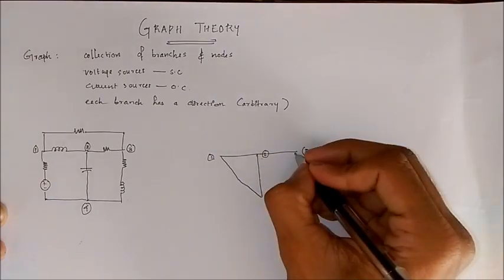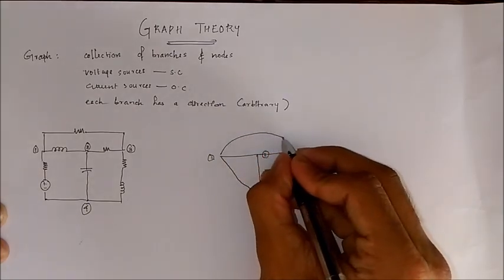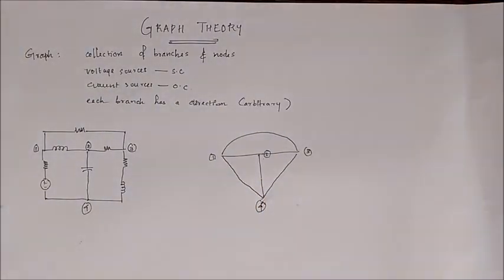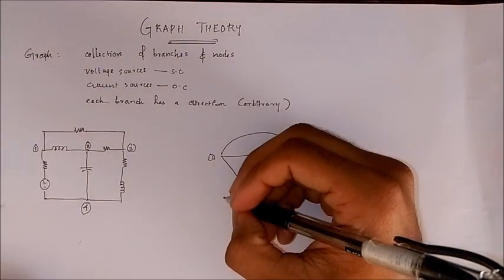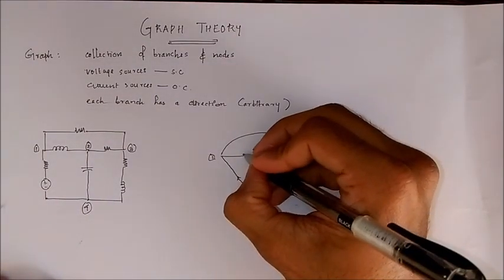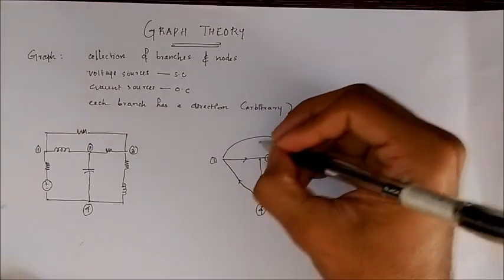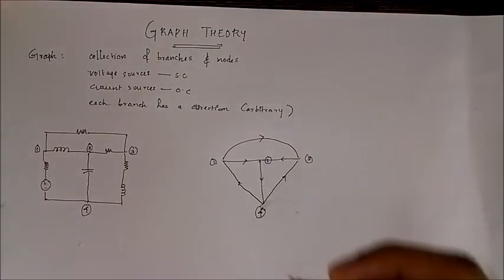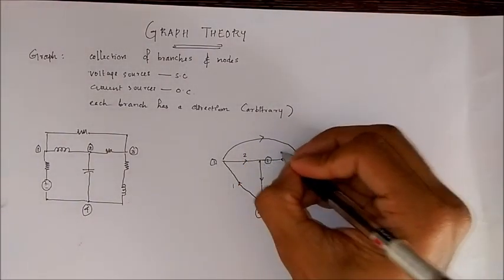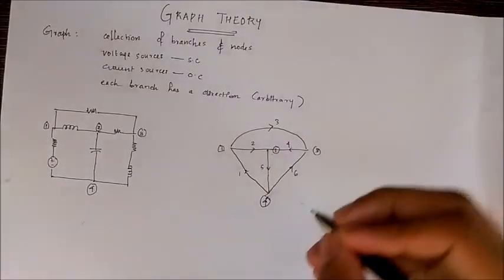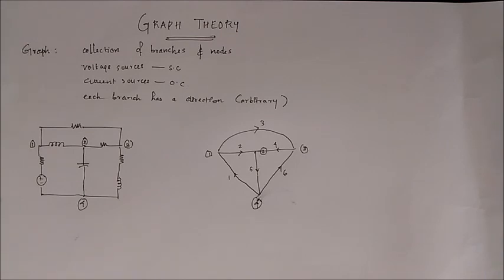On drawing the graph we can see that nodes one and two are connected, and these are connected to three, and from all these points there is a connection to node four, and finally a connection from one to three. We are assigning arbitrary directions, and while doing problems we also number the branches. So this is the graph of such a circuit.